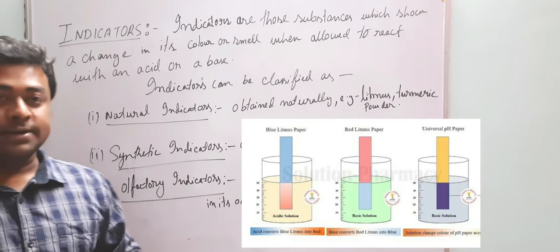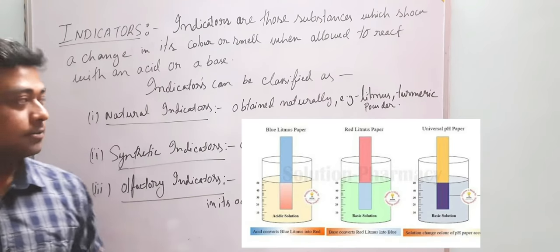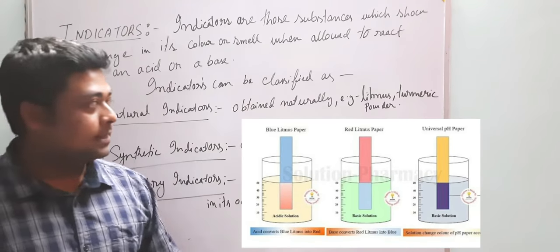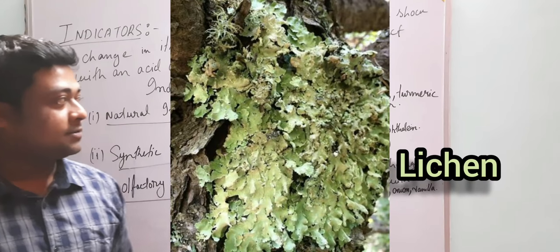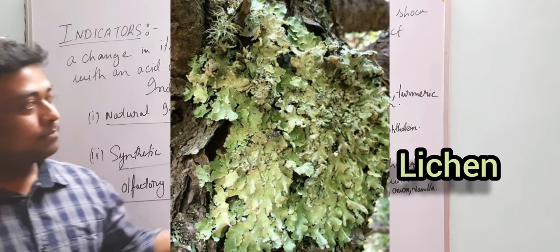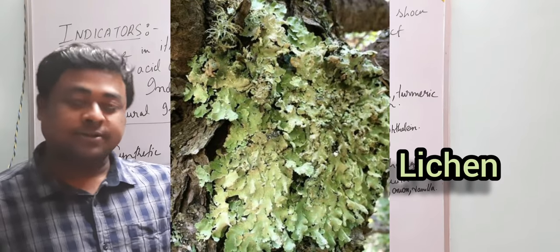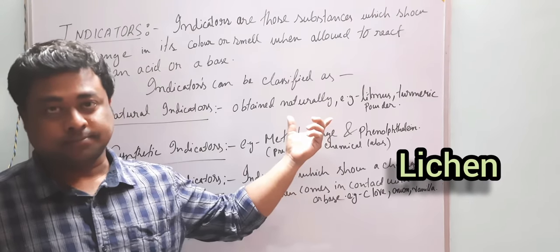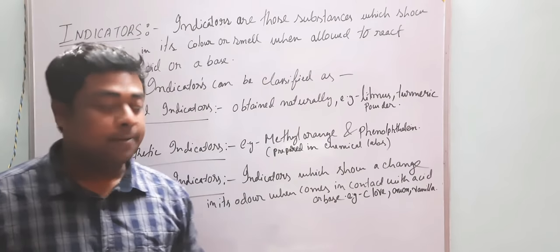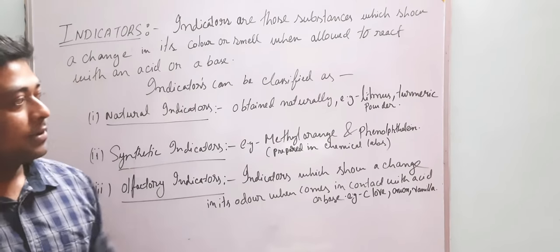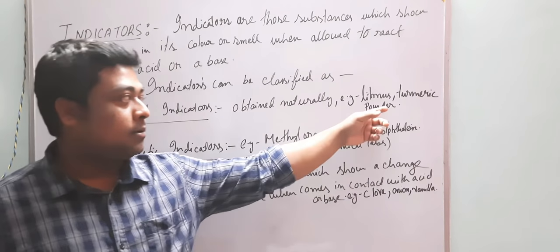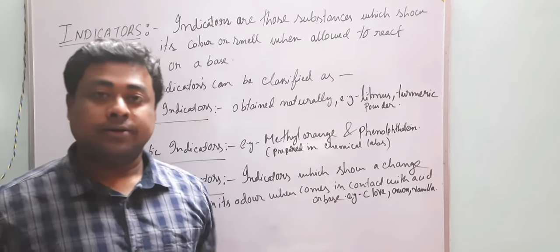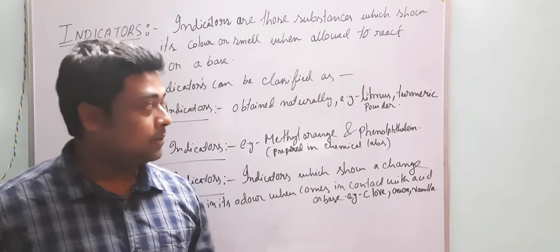The first natural indicator is litmus. Litmus is a purple dye which is obtained naturally from lichen, which belongs to Thallophyta. Turmeric powder is something we regularly use in our kitchens.